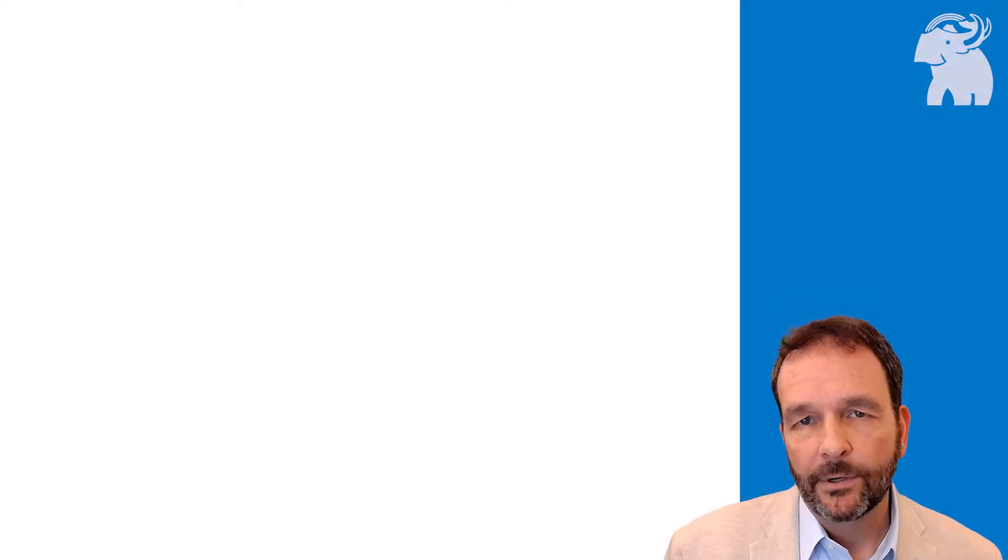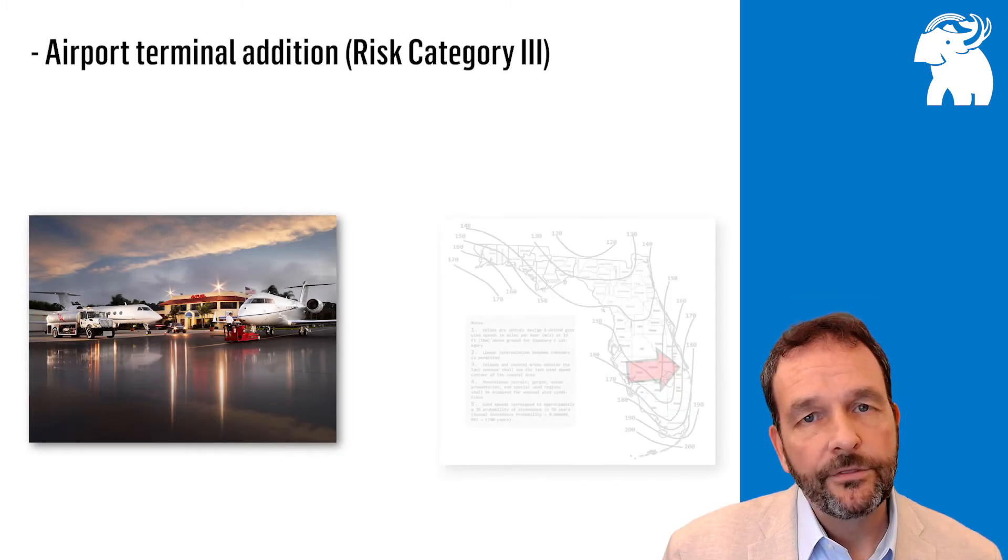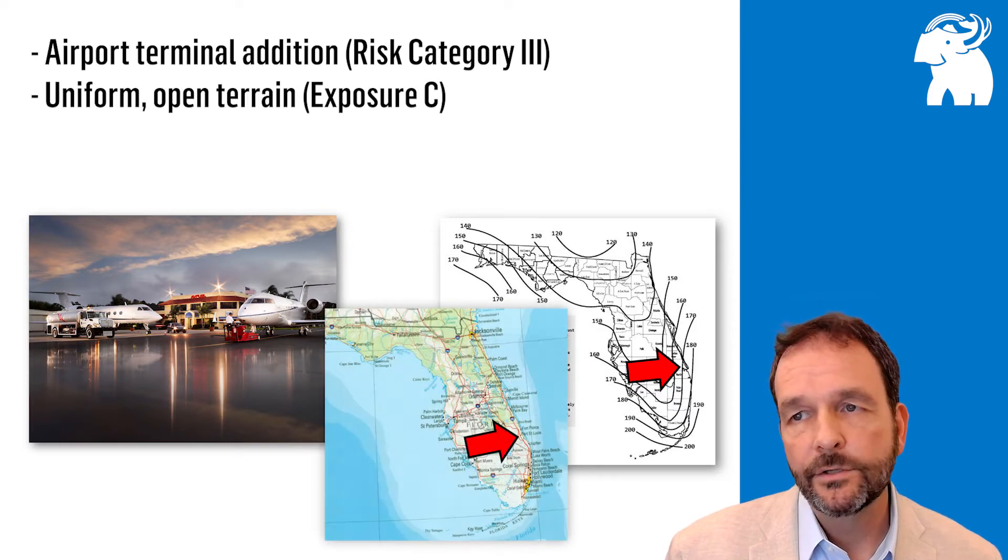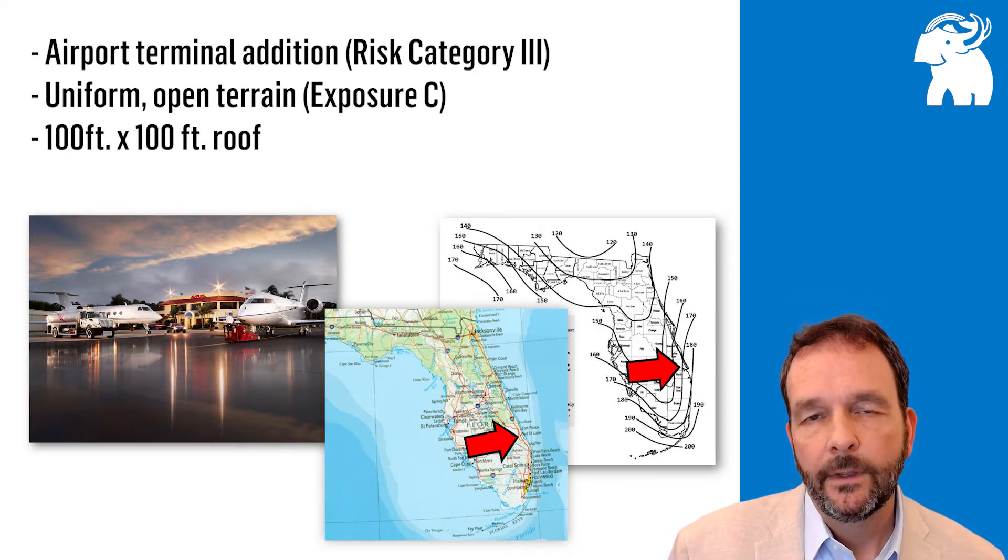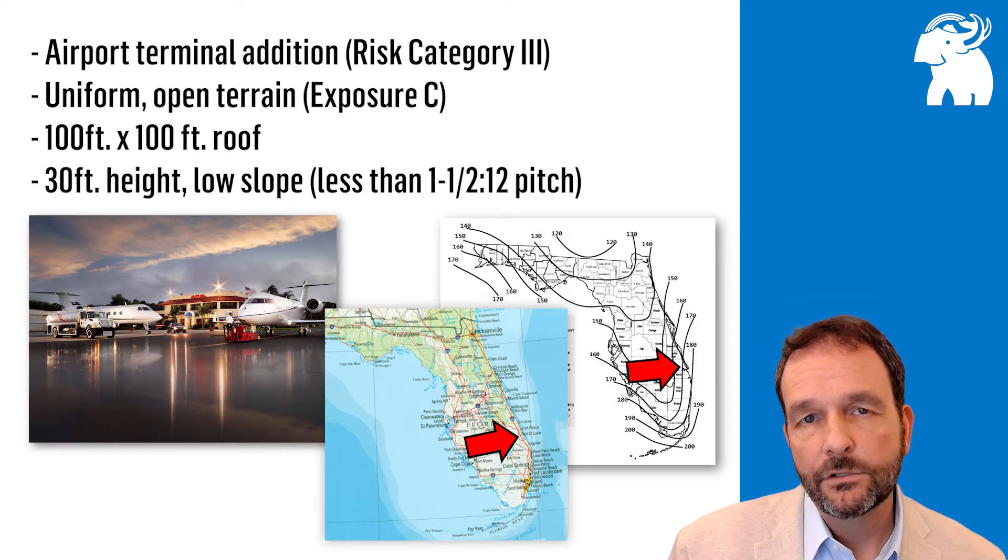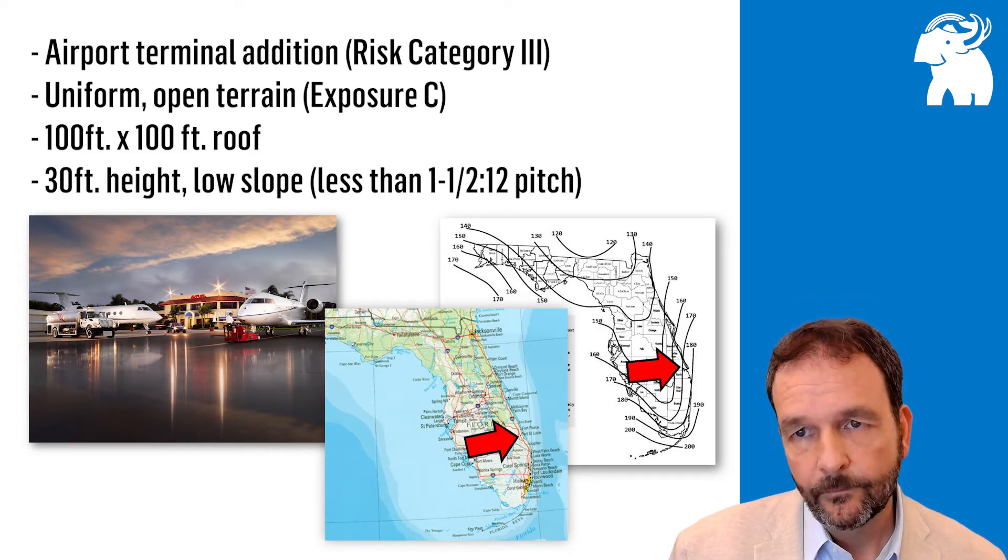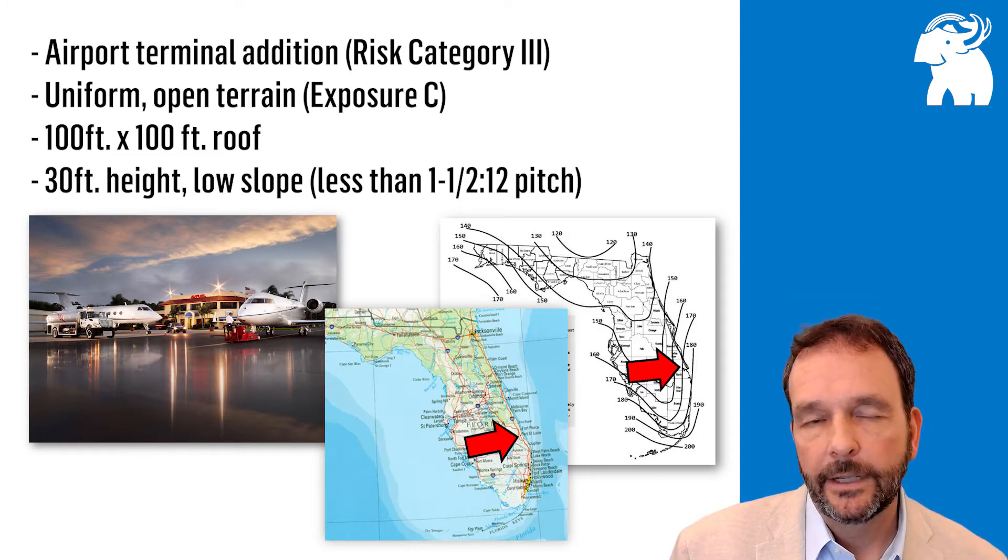Here's our example problem. We have an airport terminal addition, risk category 3, surrounded by uniform open terrain. Since it's an airport, it's considered exposure C. The building's going to be 100 foot by 100 foot with a 30 foot high roof. It's a low-slope roof, less than 1.5 in 12 pitch. It's located in Port St. Lucie, Florida, near the Florida Atlantic coast.